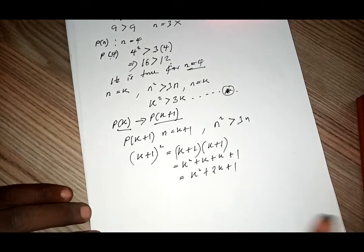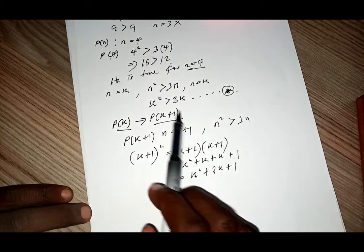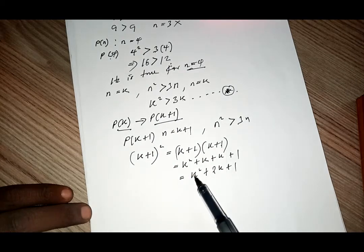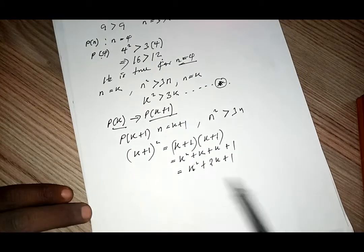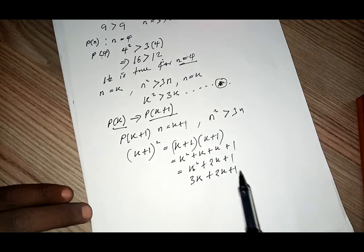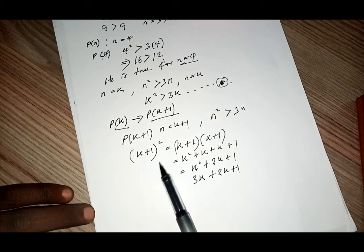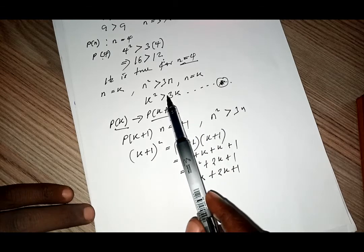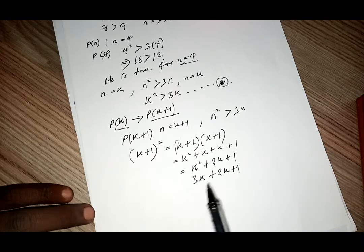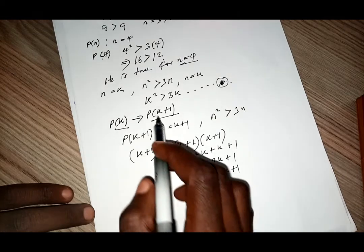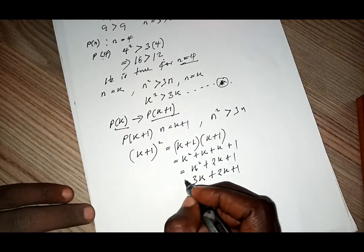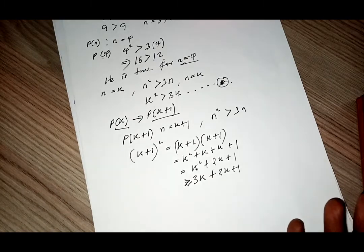Now, if you look at this condition, we know that k squared is greater than 3k from our star equation. So I am going to replace k squared with 3k here. That gives 3k plus 2k plus 1. Since k squared is strictly greater than 3k, I will use greater than or equal to, assuming there is some equality somewhere.